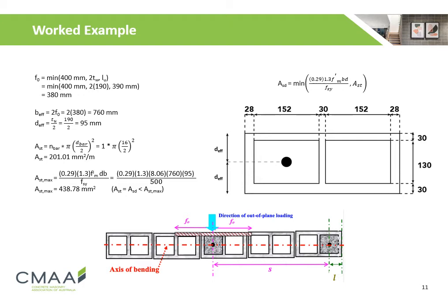Using one steel bar with a bar diameter of 16 mm, the area of steel reinforcement is calculated, and the maximum allowable area of steel reinforcement is also calculated. As the area of steel reinforcement is less than the maximum, we use 201.01 mm² of steel reinforcement.